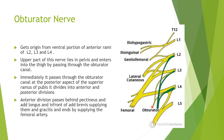The obturator externus originates on the outer surface of the obturator membrane and the pubic and acetabular rami, and is inserted on the medial surface of the greater trochanter. It laterally rotates the thigh at the hip joint, and its nerve supply is the obturator nerve. This is the linear aspera region associated with it.